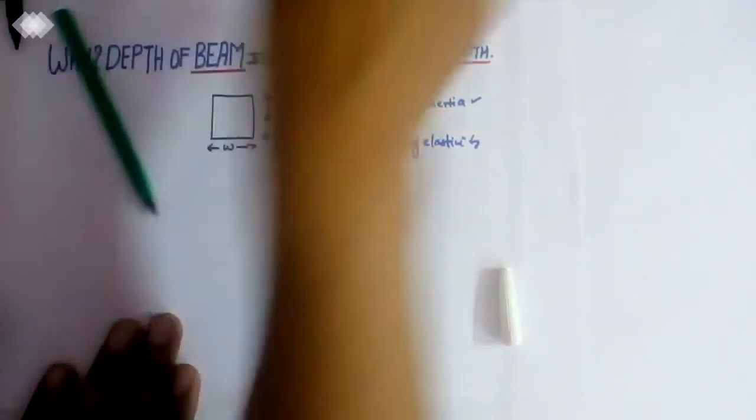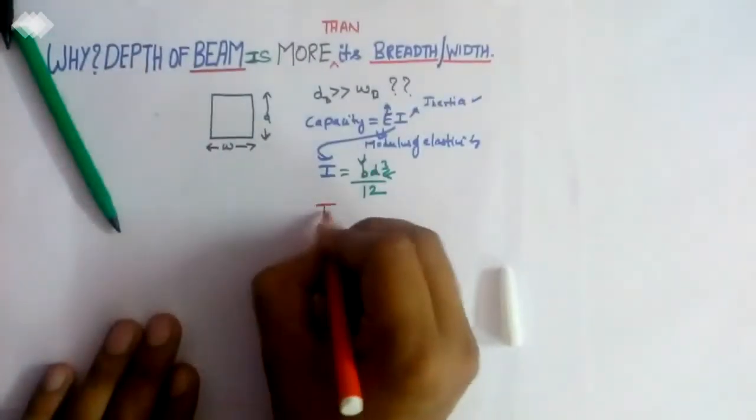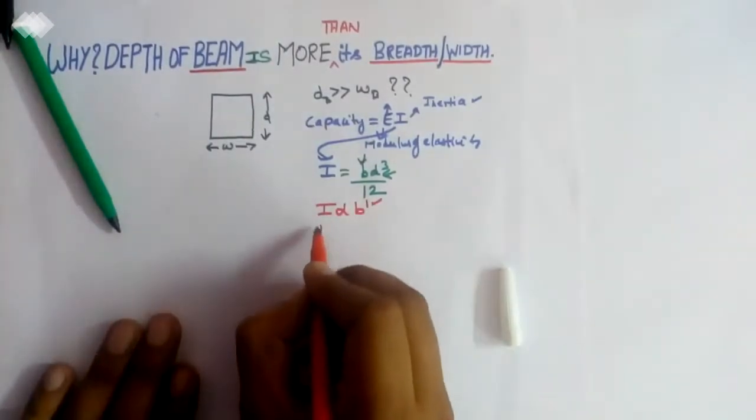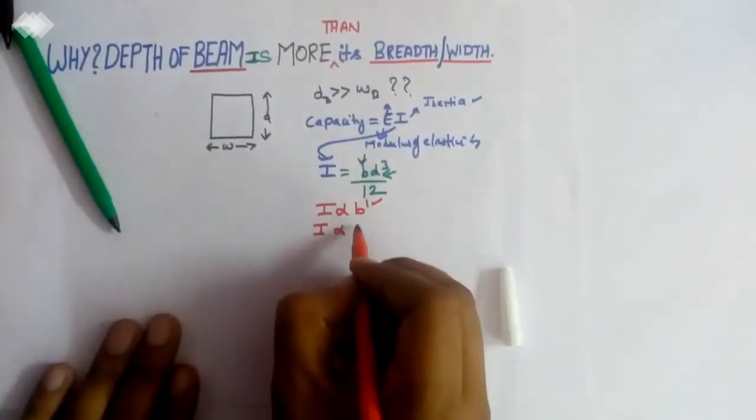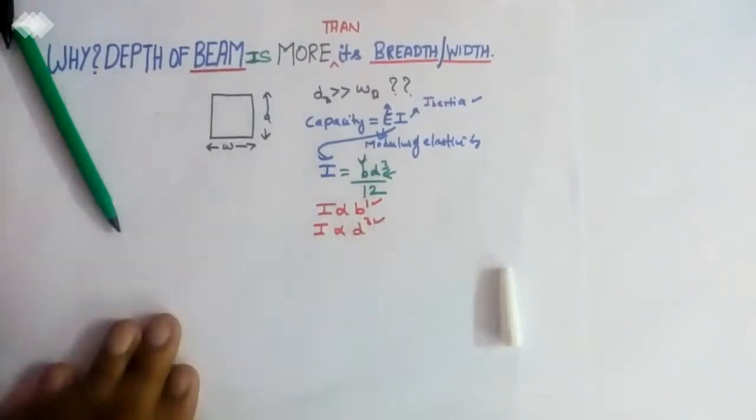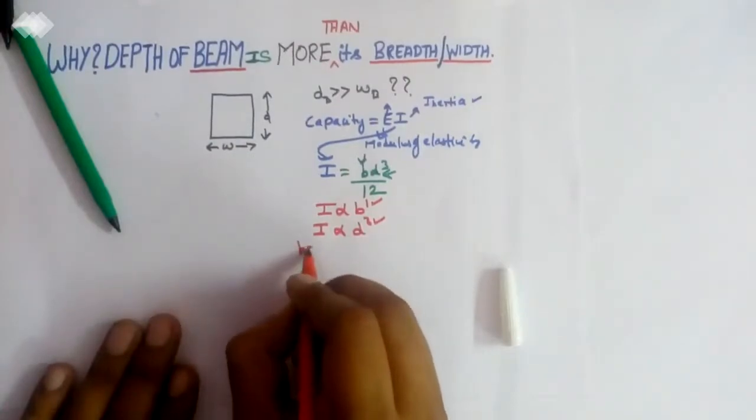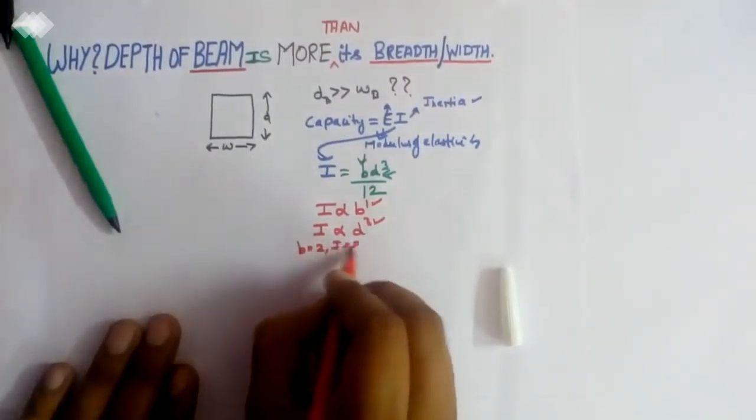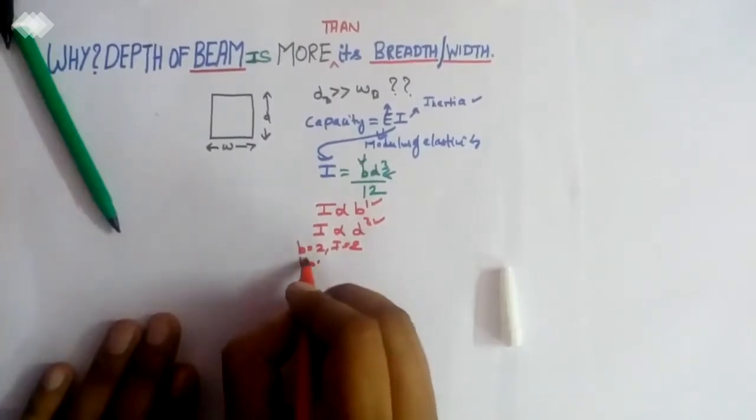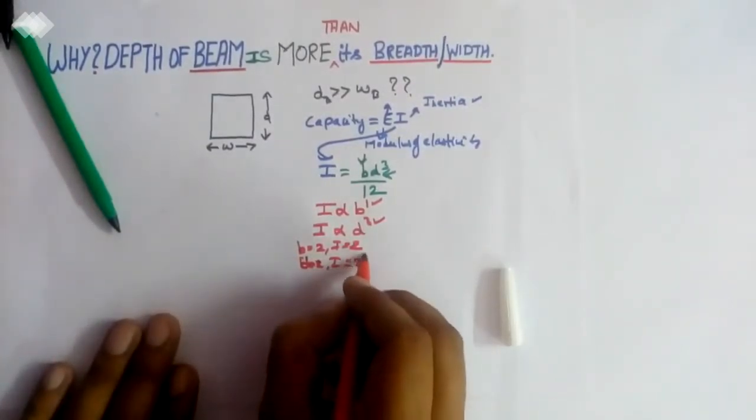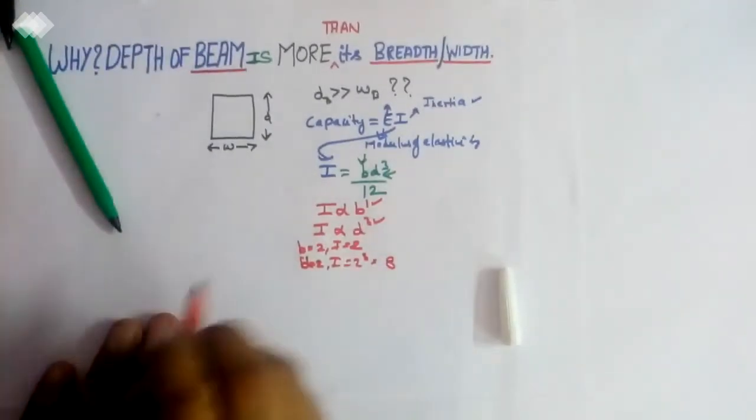If you see, I is proportional to B to the power 1 and depth to the power 3. So if we take B as 2, I comes out to be 2. If we take D as 2, I comes out to 2 cubed, that is 8.